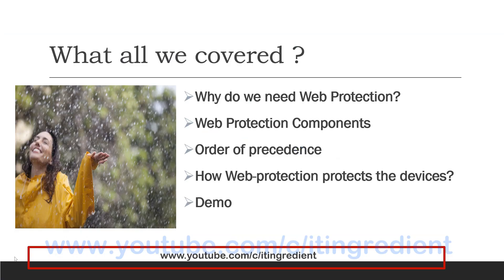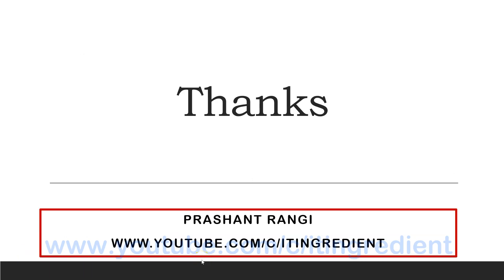Let's recap what we covered in this video: why we need web protection, the different components of web protection, the order of precedence when there is a conflict between components, how web protection protects devices using either the SmartScreen client or the network protection client, and in the demo, how all those restrictions impacted end user clients. I hope this was informative. Please share and subscribe if you liked the video. If you want me to make a video on a specific topic, please mention it in the comments. Thanks for watching. Have a great day.